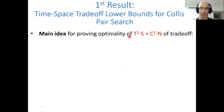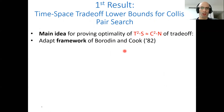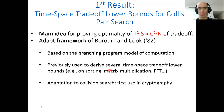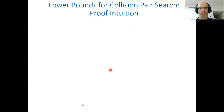To prove this trade-off is optimal for the collision search problem, we adapt the framework of Borodin and Cook, published in 1982, which was used to derive several time-space lower bounds for interesting problems such as sorting and matrix multiplication. This seems to be the first time it is used in the domain of cryptography, which is kind of interesting.